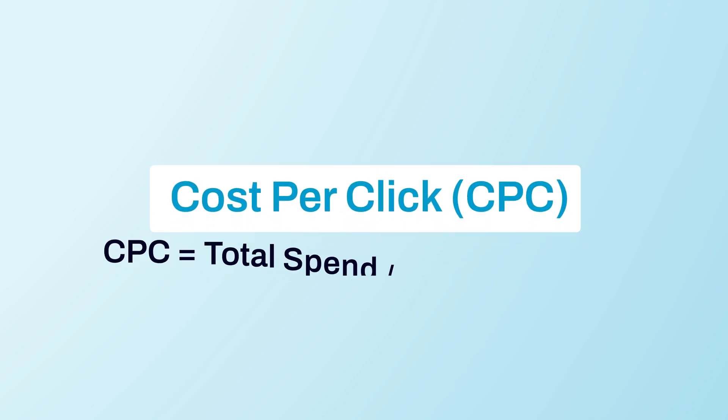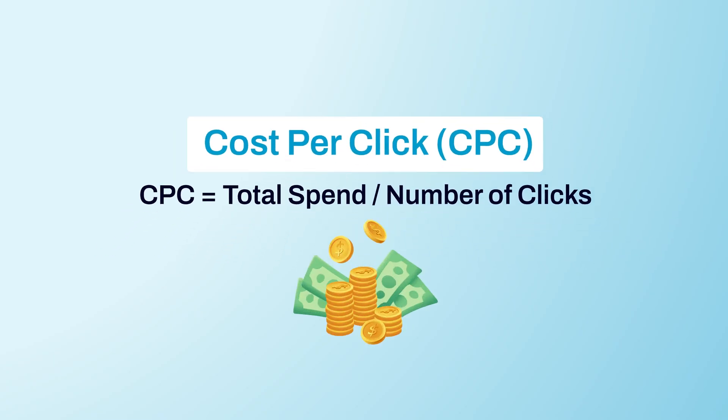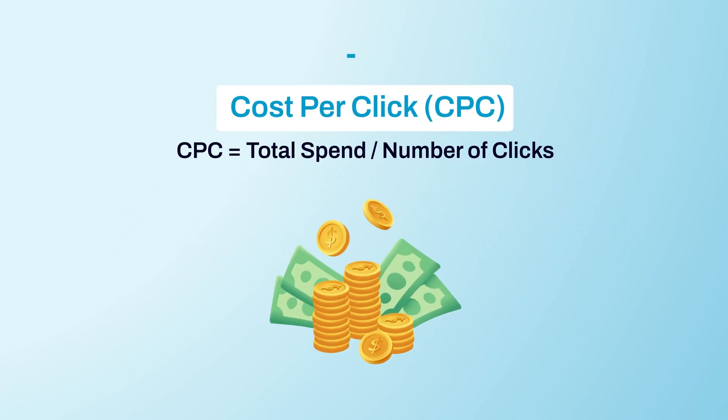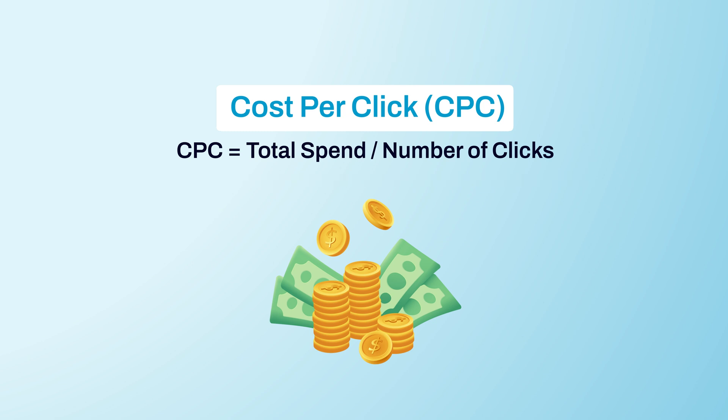Let's have a look at some cost efficiency metrics. First on the list is CPC, cost per click. This measures the cost of each click received on Facebook. Combined with the clicks metric, it helps you find campaigns that generate a significant volume at low cost. You can consider allocating more budget to such campaigns, or use CPC to test different ad creatives, searching for one that's more cost efficient.